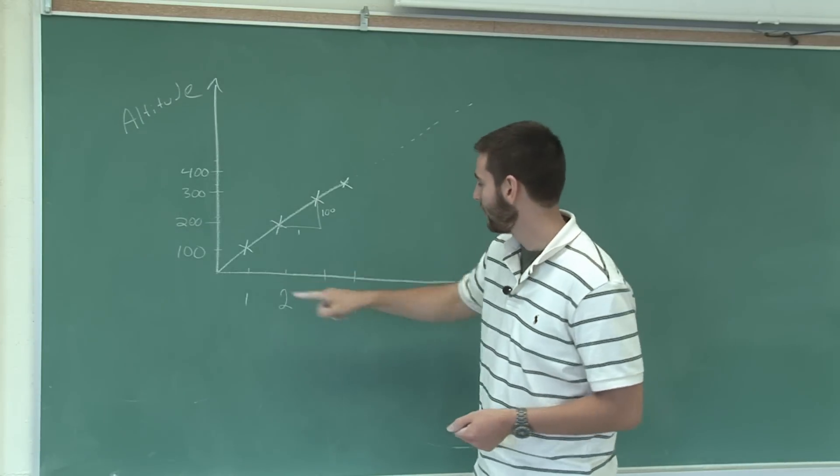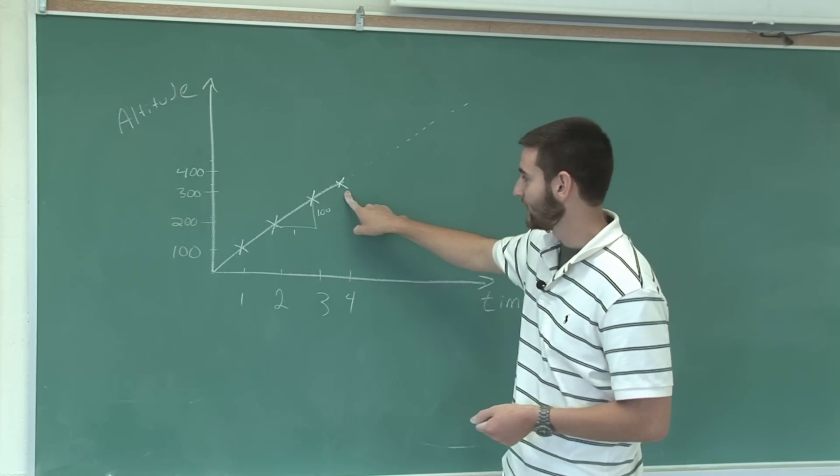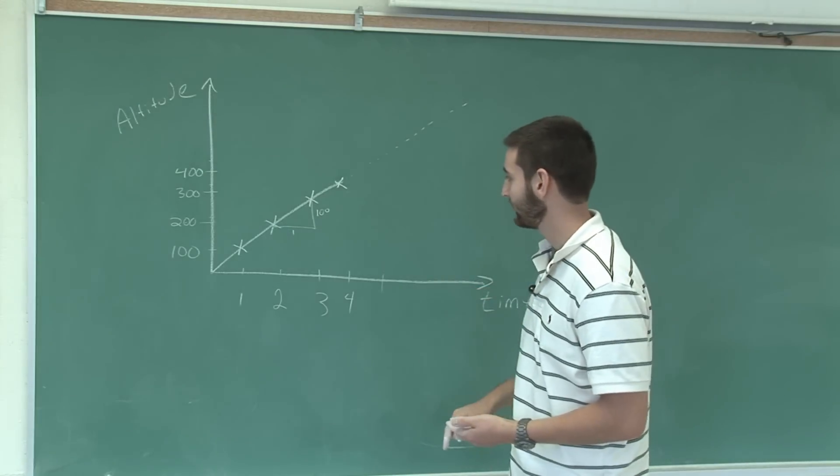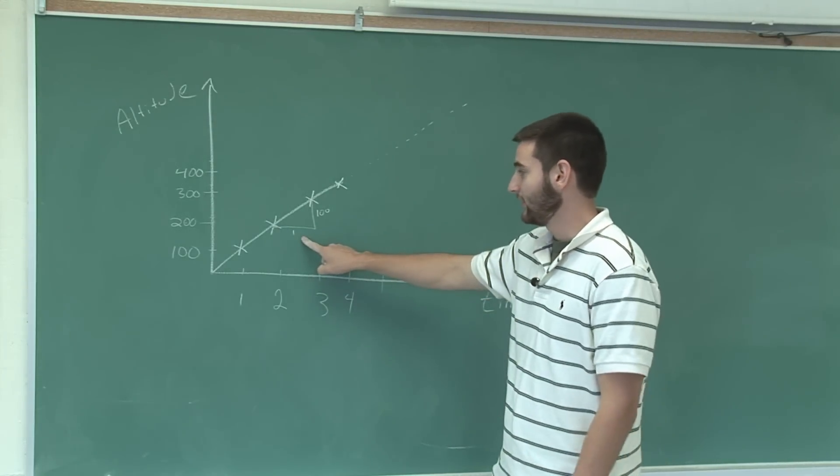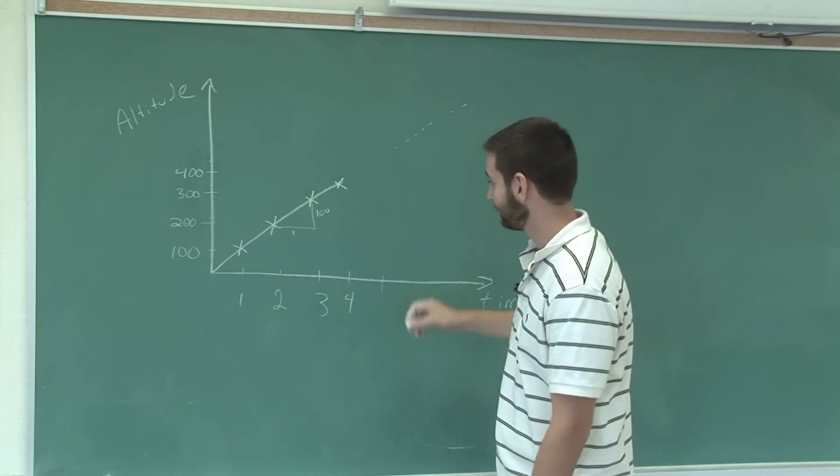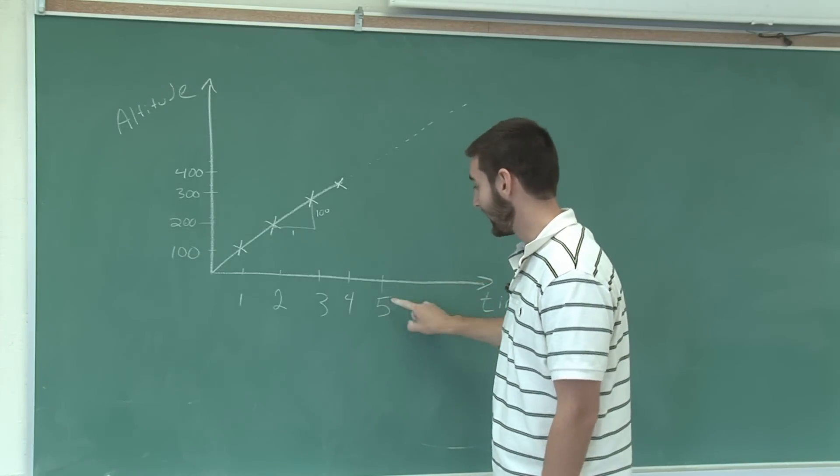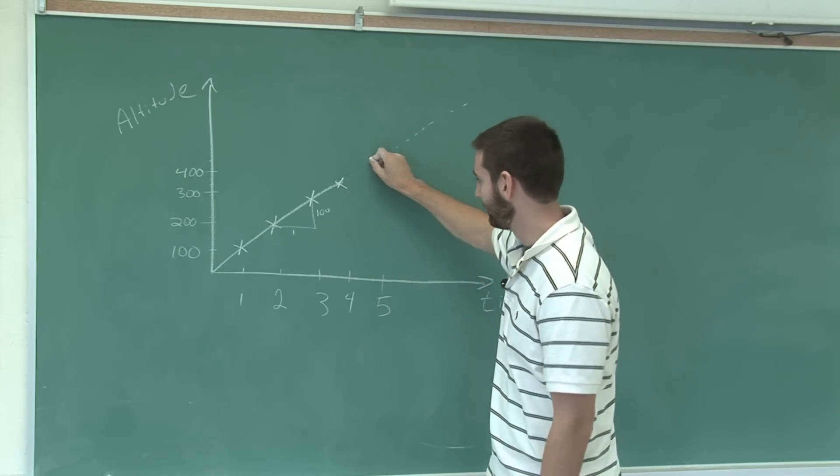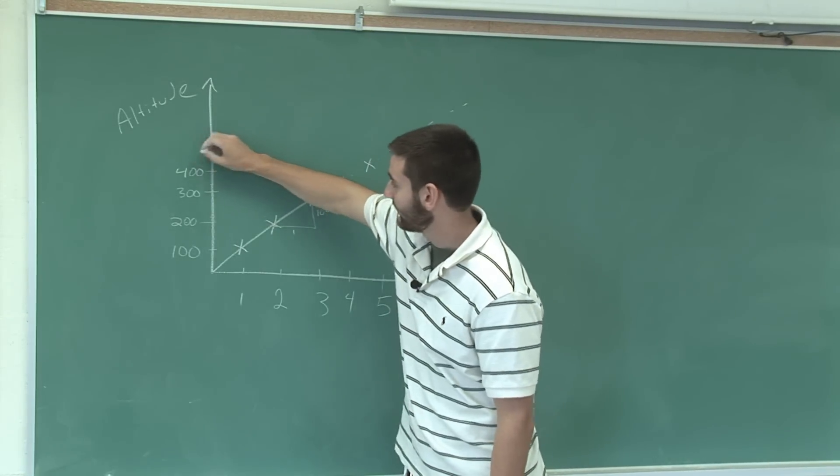Since my data only goes up to four seconds, if I wanted to predict the height of my rocket after five seconds, I would have to assume that the rocket will increase its height by 100 feet every additional second. So I'll predict that after five seconds, I'll have increased my height by another 100 feet to make it be at 500.